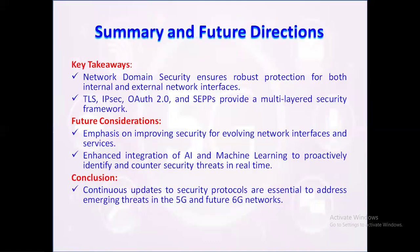Network domain security plays an essential role in protecting both internal and external communication within telecom networks, ensuring that only trusted entities interact with network resources. Using a layered security model that combines TLS, IPsec, OAuth 2.0, and SEPP, the framework addresses various security challenges from data encryption to access control. Looking ahead, network security will continue to evolve alongside emerging technologies like artificial intelligence and machine learning, which can proactively identify and address threats in real time. As we move toward future networks like 6G, enhancing these protocols and integrating advanced security solutions will be crucial to maintaining secure, resilient, and user-focused network environments.